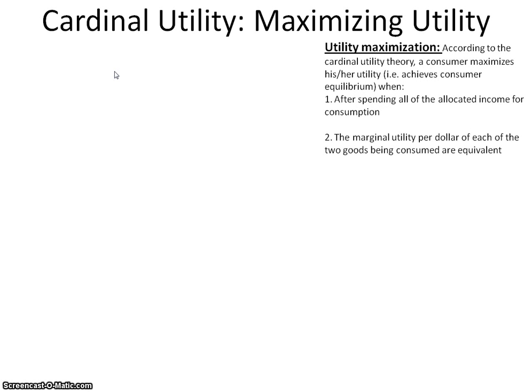In economics, we desire to see how consumers go about maximizing their satisfaction. According to the Cardinal Utility Theory, it's a two-tiered approach, meaning there are two factors within the criteria that must be achieved if utility is to be maximized. A consumer must, in order to maximize their utility: first, spend all of their allocated income for consumption; and second, the marginal utility per dollar of each of the two goods being consumed must be equivalent.